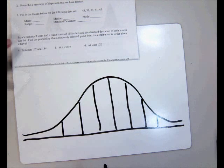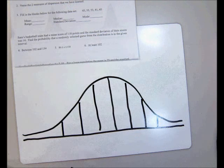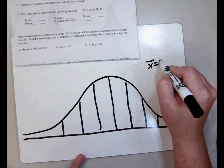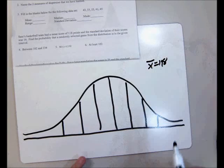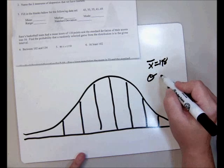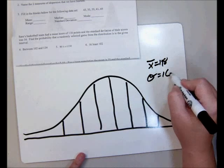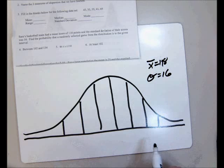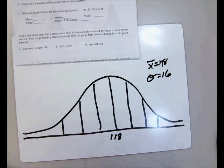Now if we look at this problem here, Sarah's basketball team had a mean score of 118 points and the standard deviation of 16 points. In the normal distribution, the mean goes in the middle of the curve on the number line at the bottom of the curve.